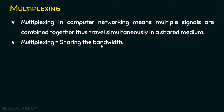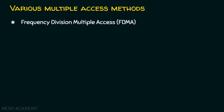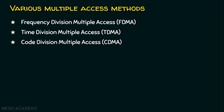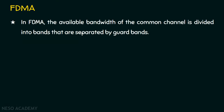The various multiple access techniques are: first, FDMA — frequency division multiple access; second, time division multiple access; and the last one is code division multiple access. So we have basically FDMA, TDMA, and CDMA. Let's start with frequency division multiple access. In FDMA, the available bandwidth of the common channel is divided into bands that are separated by guard bands.